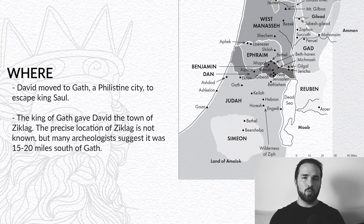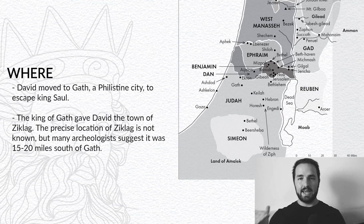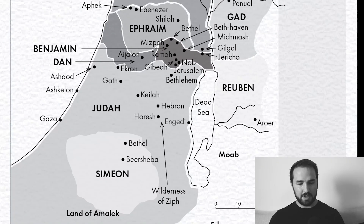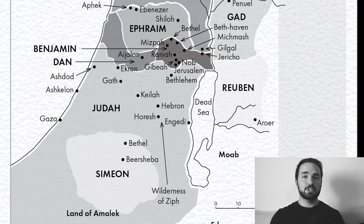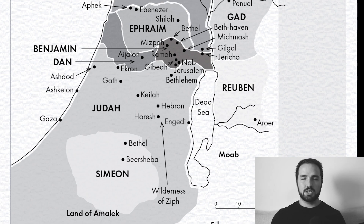As far as our map goes today, we can pinpoint one of the locations, but the second location is somewhat unknown. David moved to Gath, which was a Philistine city, to escape Saul. You can see Gath on the map — it's kind of on the eastern side of the promised land, towards the south in the land of Judah. The king of Gath gave David and his men a home, a town called Ziklag. Ziklag's location is unknown, but many archaeologists think it may have been 15 to 20 miles south of Gath.